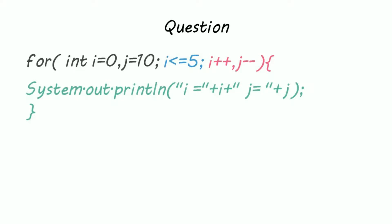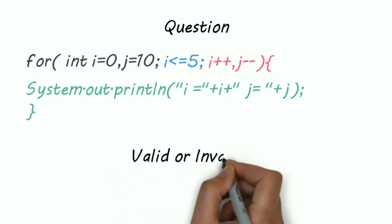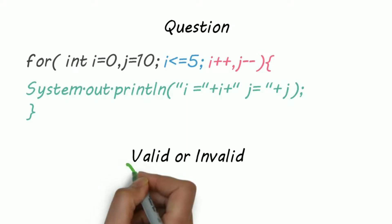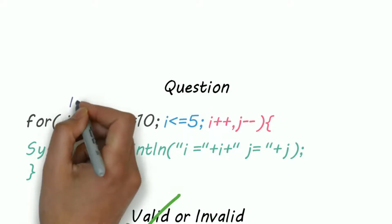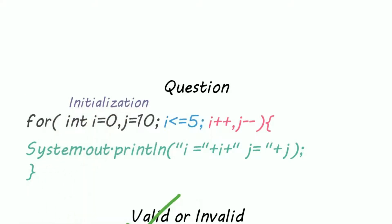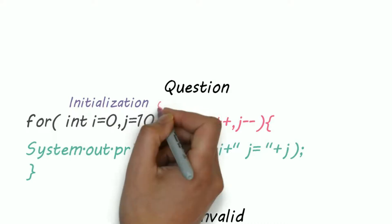Is this a valid for loop? If you think yes, then can you get the output? The answer is yes. The only thing that matters is syntax. We initialize two variables i and j. You can even initialize more.